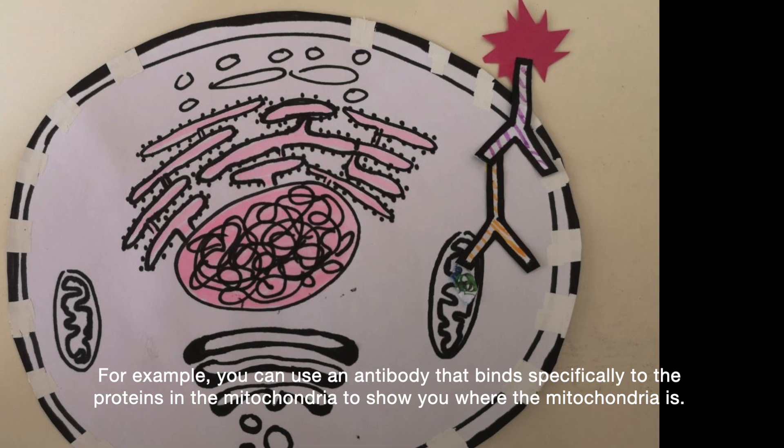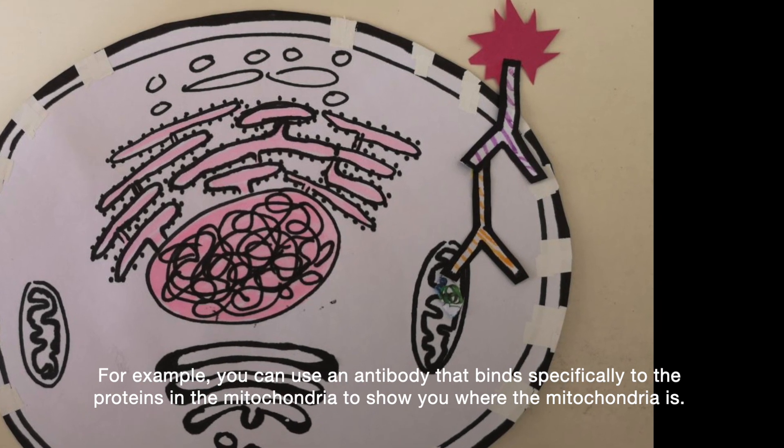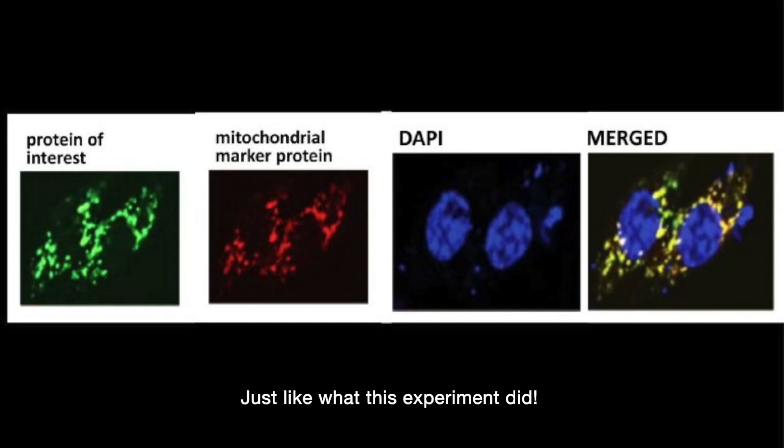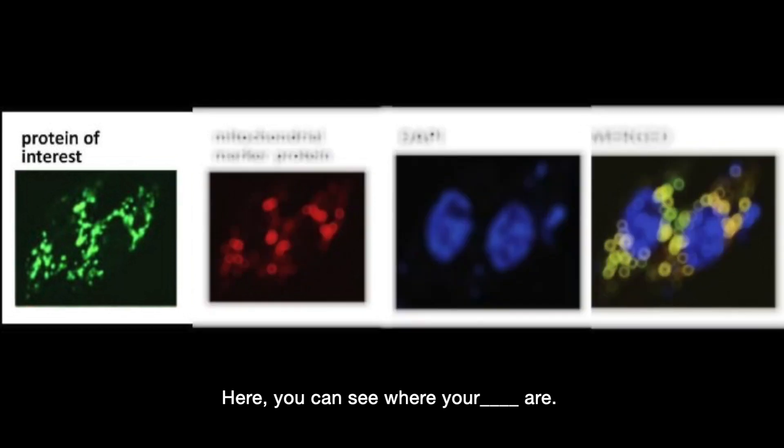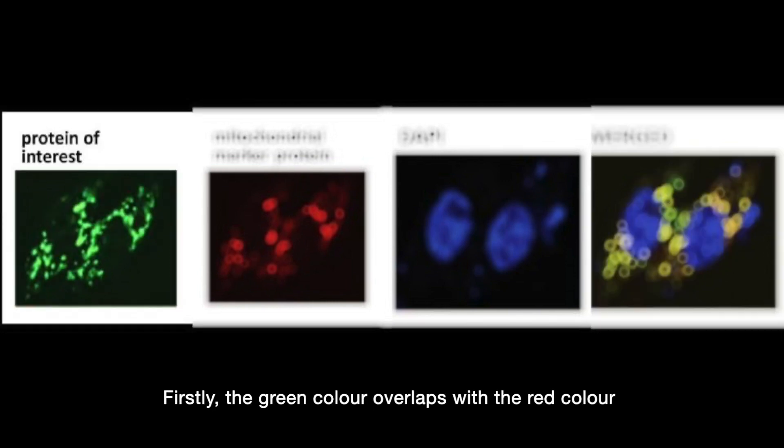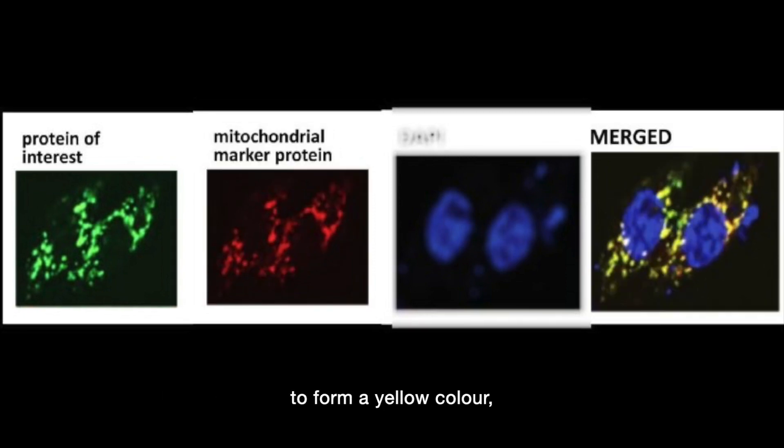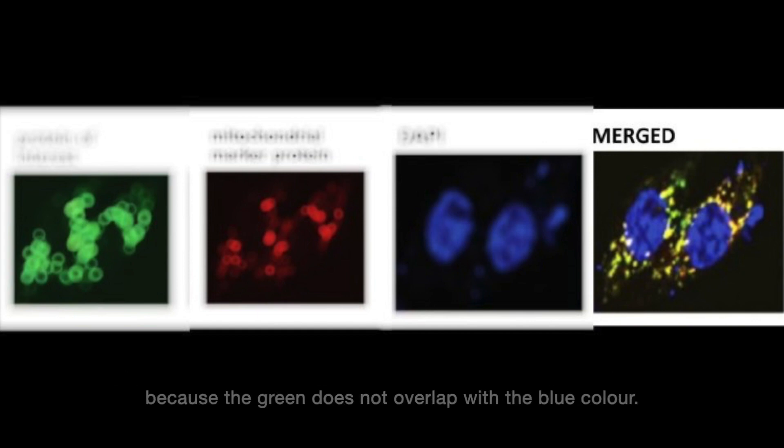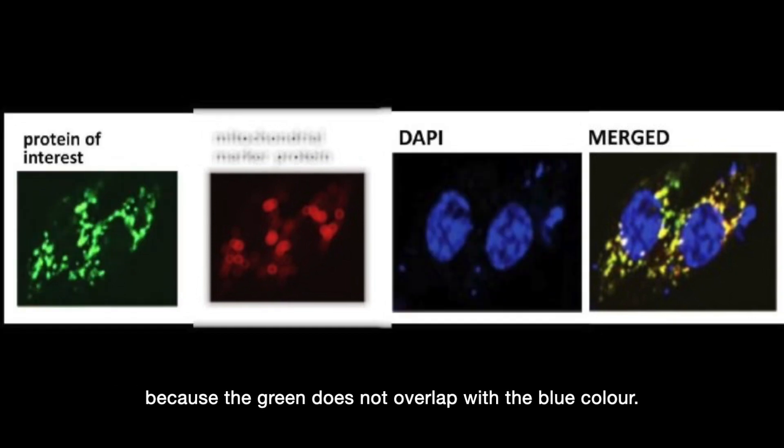For example, you can use an antibody that binds specifically to the proteins in the mitochondria to show you where the mitochondria is. Just like what this experiment did. Here, you can see where your proteins of interest, mitochondria and nucleus are. In the merged image, you can also infer two things. Firstly, the green color overlaps with the red color to form a yellow color. Hence, it means that the protein of interest is found in the mitochondria. Secondly, you can also confirm that the protein of interest is not found in the nucleus because the green does not overlap with the blue color.